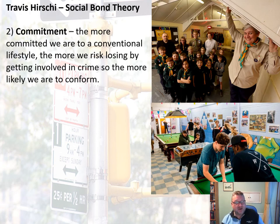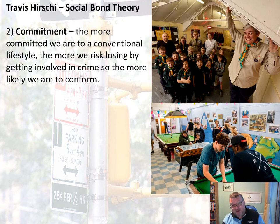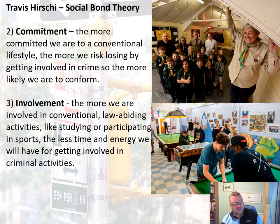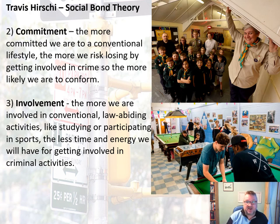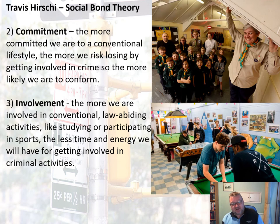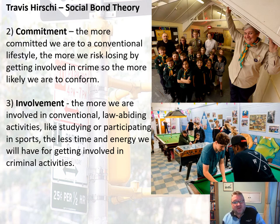Second is commitment: the more committed we are to a conventional lifestyle, the more we risk losing by getting involved in crime, so the more likely we are to conform. If you have a house, a family, children, a good job, you could lose it all if you commit a crime. Third is involvement: the more involved we are in conventional law-abiding activities such as studying or participating in sports, the less time and energy we'll have for criminal activities. This is why money is spent on youth clubs and parents want you to join the Scouts or a football team — it keeps you off the streets.